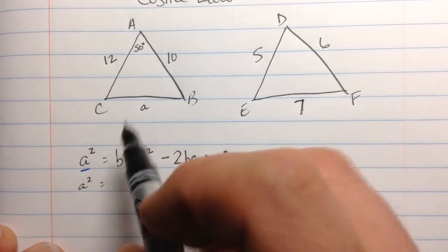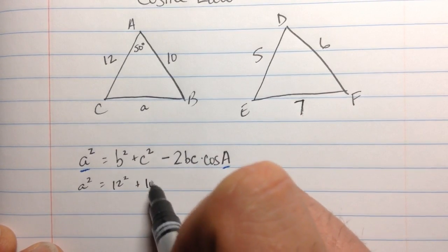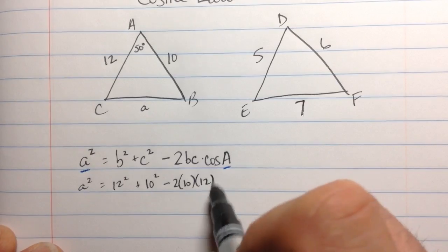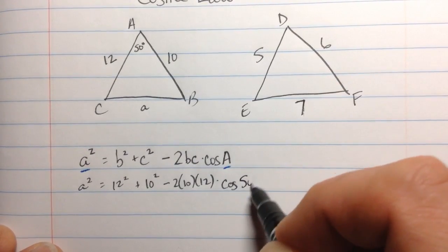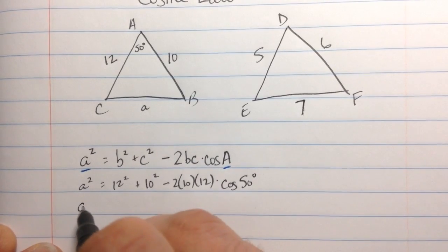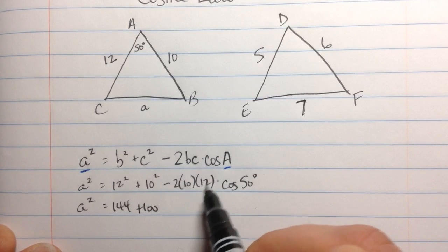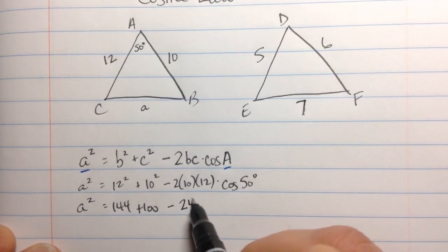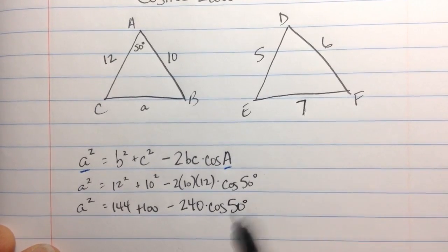Let's do it right now. a² equals, b is 12, so 12 squared, plus little c is 10, 10 squared, minus 2 times 10, times 12, times the cosine of angle A, which is 50 degrees. So that's 144, plus 100. 10 times 12 is 120, times 2 is 240, so that's minus 240, times the cosine of 50 degrees.